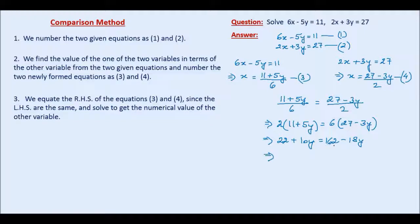And let us bring the y term to the left hand side. 10y plus 18y will give us 28y. And this side will be containing 162 minus 22, that is 140. So we get the numerical value of y as 140 over 28. Let us cancel with 14, so 10 times 2 is, 2 times 5 is 10. So y value becomes equal to 5.